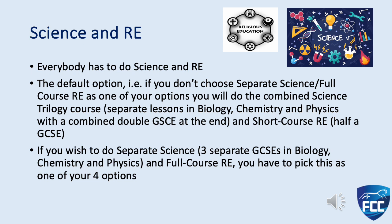All of our students will continue with science and RE at FCC. The default option, if you don't choose separate science and four-course RE, is that you will do combined science and short course RE. That means three lessons in each of biology, chemistry and physics, resulting in a combined science double GCSE taken at the end of Year 11. Short course RE is two lessons a fortnight just in Year 10, with an exam at the end of Year 10 worth half a GCSE in RE.